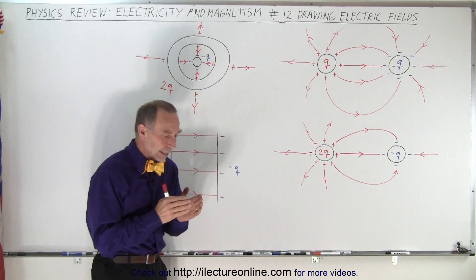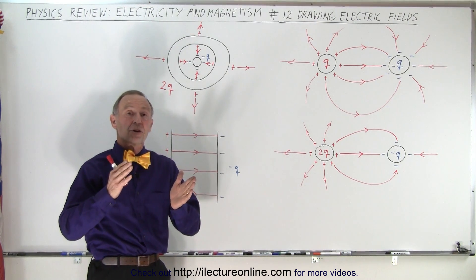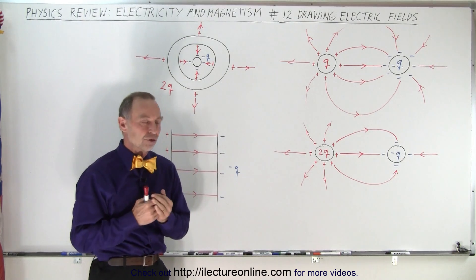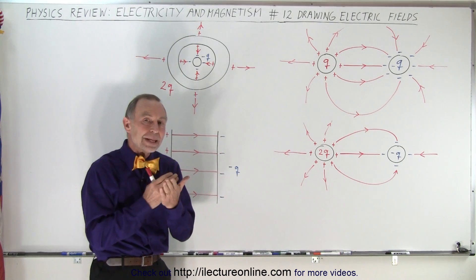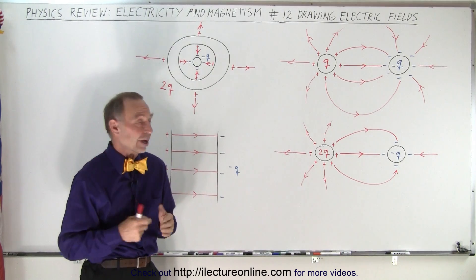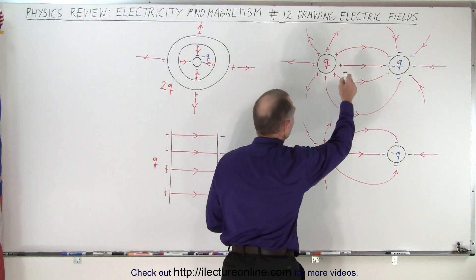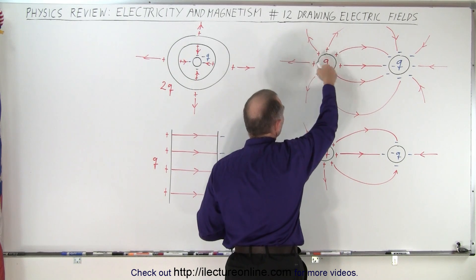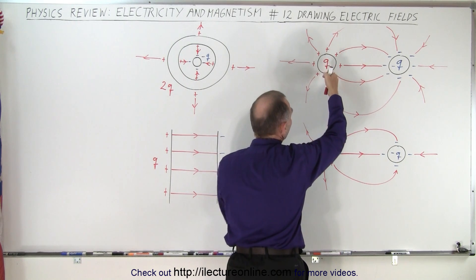First of all, electric fields emanate from positive charge and arrive at negative charges. They will always emanate perpendicular to the surface where the charge resides. So here we have positive charge, and electric field lines will emanate perpendicular away from the surface.